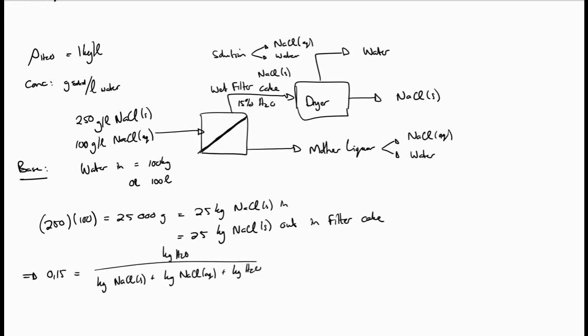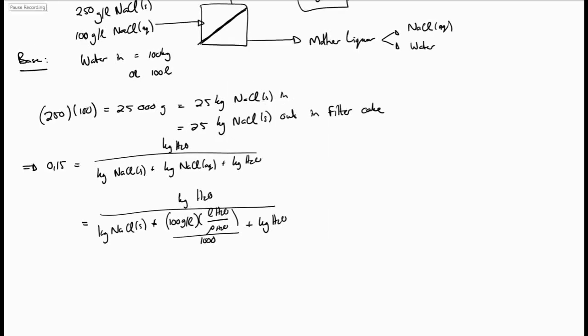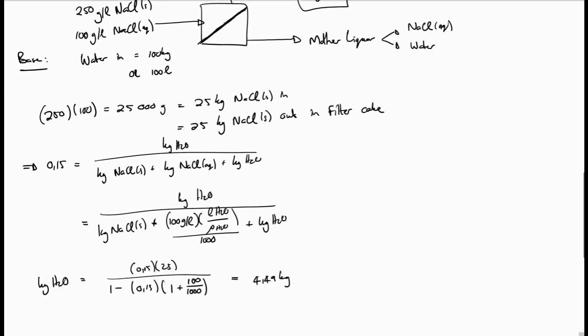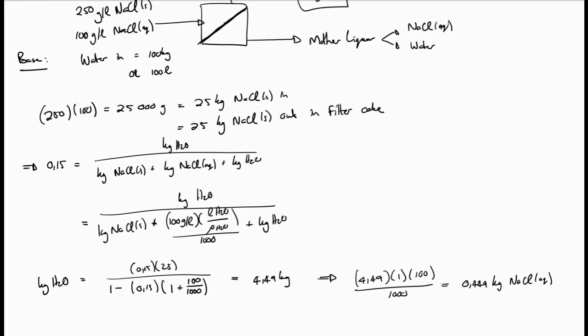We also know the amount of sodium chloride in aqueous form, because the concentration of aqueous sodium chloride in the water leaving with the filter cake must be the same as what is fed to the filter — as I said before, at a split, nothing changes to the concentration of the species. Substituting the concentration of aqueous sodium chloride for the water leaving with the filter cake, we get this equation, and after manipulation, there is 4.49 kilograms of water leaving with the filter cake. From this, we can calculate 0.449 kilograms of sodium chloride in aqueous form leaving with the filter cake.